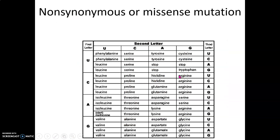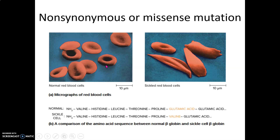The next type is a non-synonymous or missense mutation. These also change the base pair. For example, UUU (phenylalanine) becomes UUA, which codes for leucine — so we went from phenylalanine to leucine. What effect does this have on our protein? The answer is it depends. You might think a single base pair change can't be drastic, but it can be.